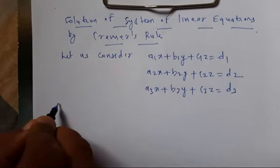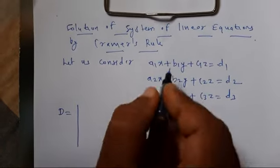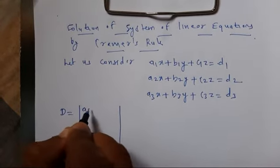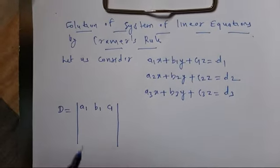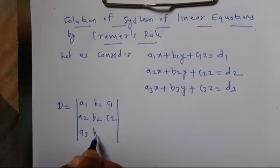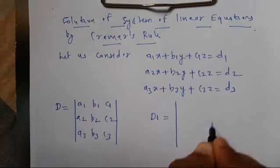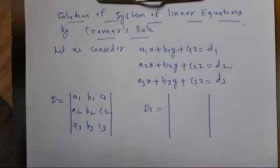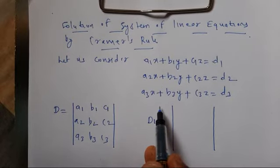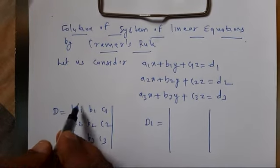D indicates the determinant of the coefficients of x, y, z — that is a1 b1 c1 / a2 b2 c2 / a3 b3 c3. For D1, used to find the value of x, I replace the first column by d1, d2, d3.